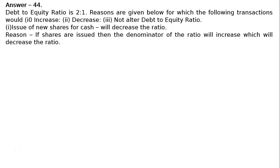First: Issue of equity shares for cash will decrease the ratio. Reason: if shares are issued, then the denominator of the ratio will increase, which will decrease the ratio. Because if you are issuing shares, then equity will increase; once the denominator is increased, it will decrease the ratio.